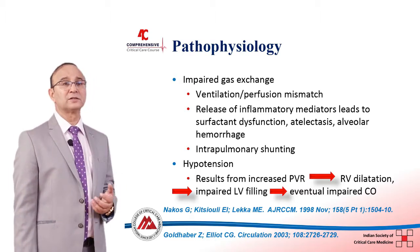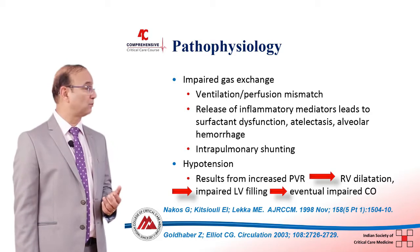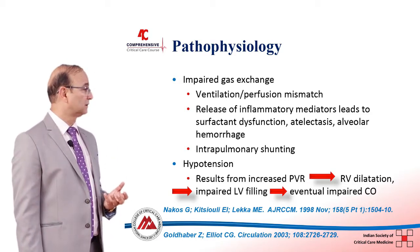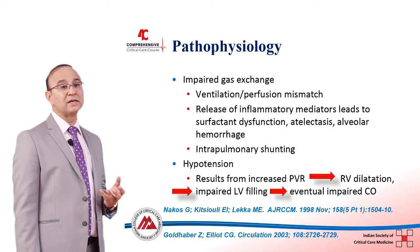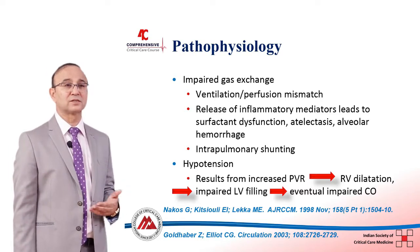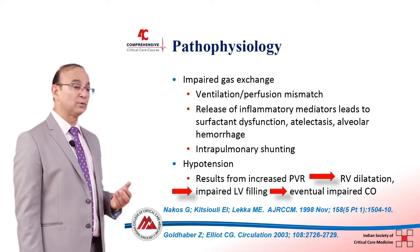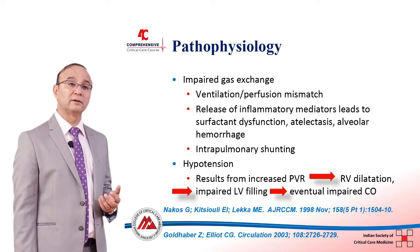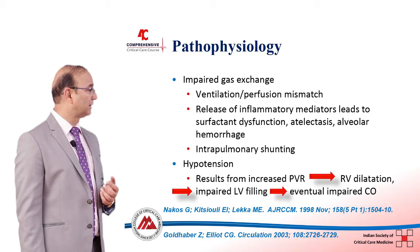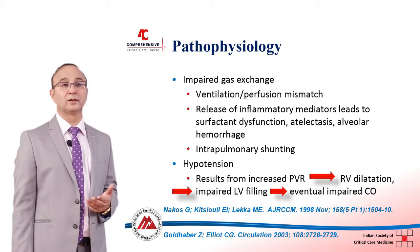In massive pulmonary embolism, patients develop hypotension due to increased pulmonary vascular resistance caused by obstruction of the outflow tract. This leads to right ventricular dilatation, impaired left ventricular filling, and eventually impaired cardiac output.